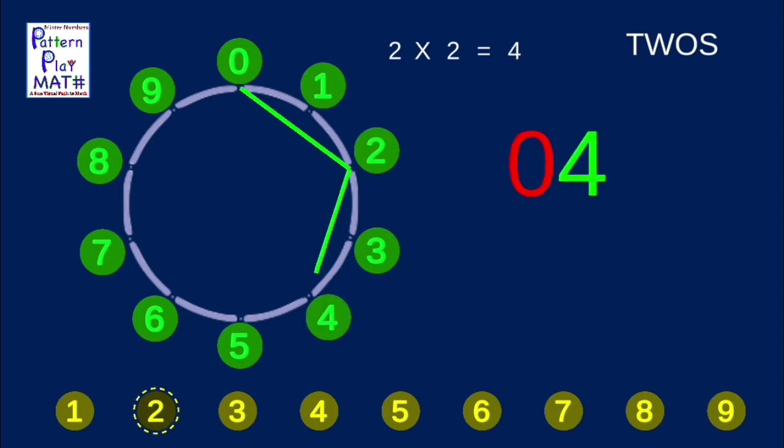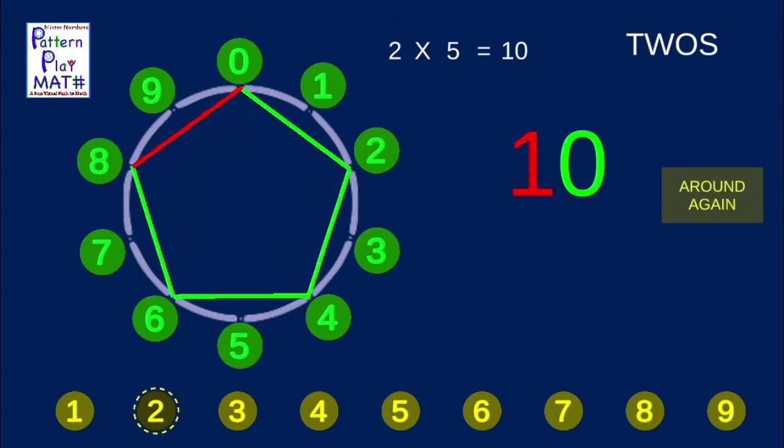From 2, we move 2 more spaces, so we'll touch 4, and then 6, and then 8, and then 0. 2, 4, 6, 8, who you appreciate!